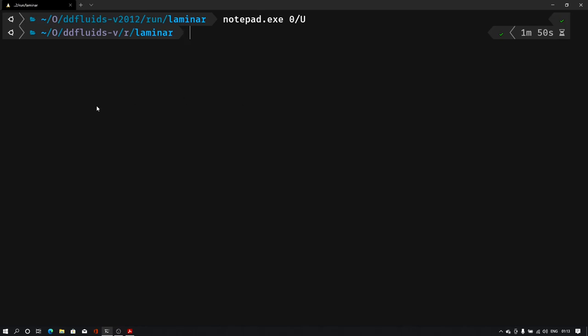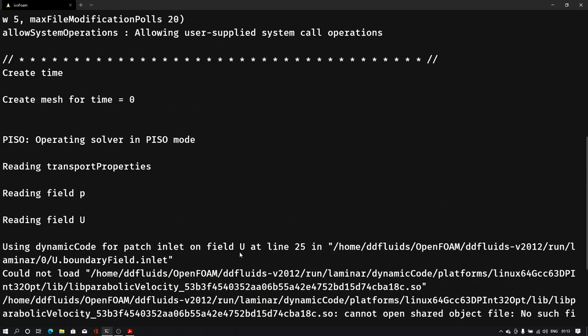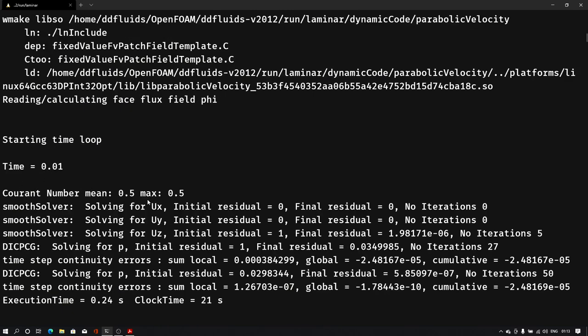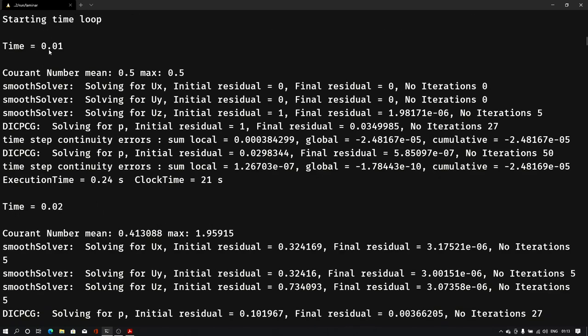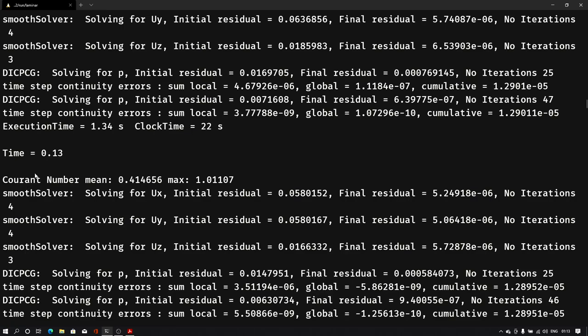So here I am using icoFoam solver, so I'll type icoFoam and hit enter. As you can see it started and it is saying that it is creating a dynamic code file for the inlet patch. So basically it is compiling that equation that we just gave and it will save that code file into our case file only. Once it finishes compiling it will start calculating. My simulation is finished - it's a very small pipe with a very basic inlet-outlet condition. So let me open this case into ParaView.